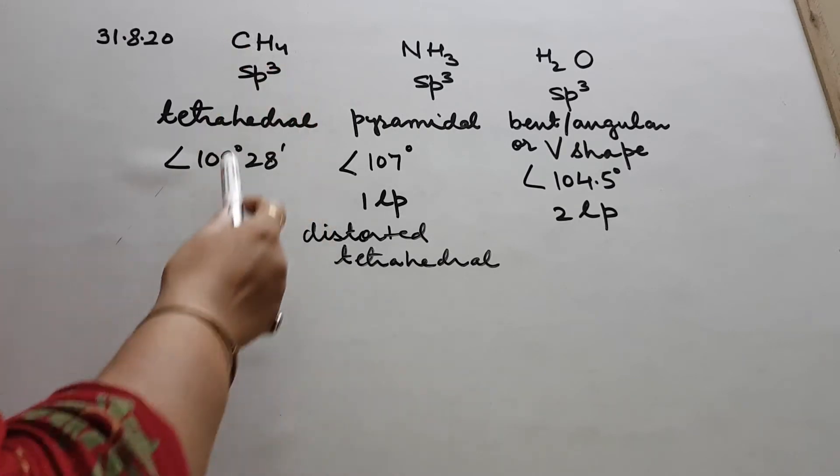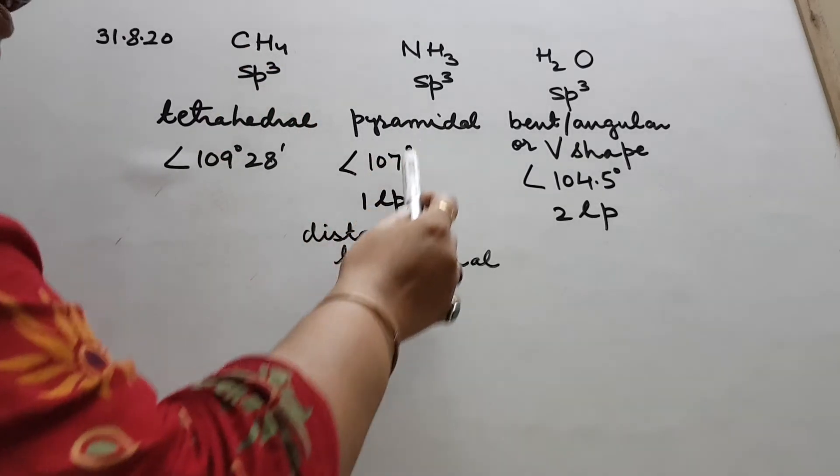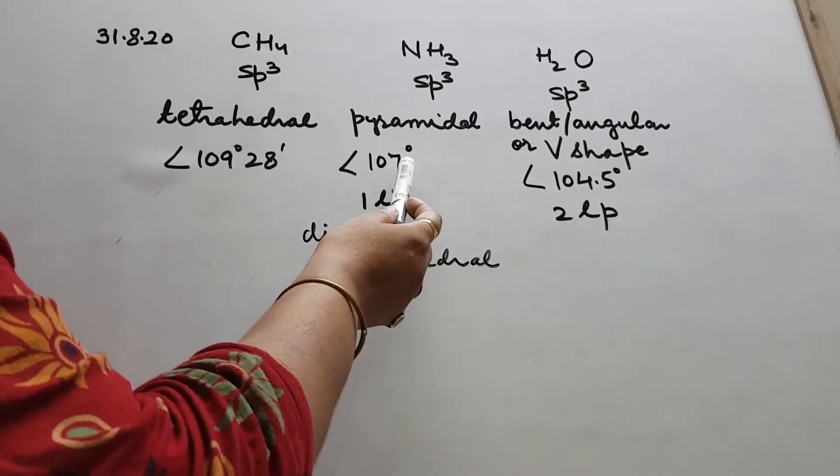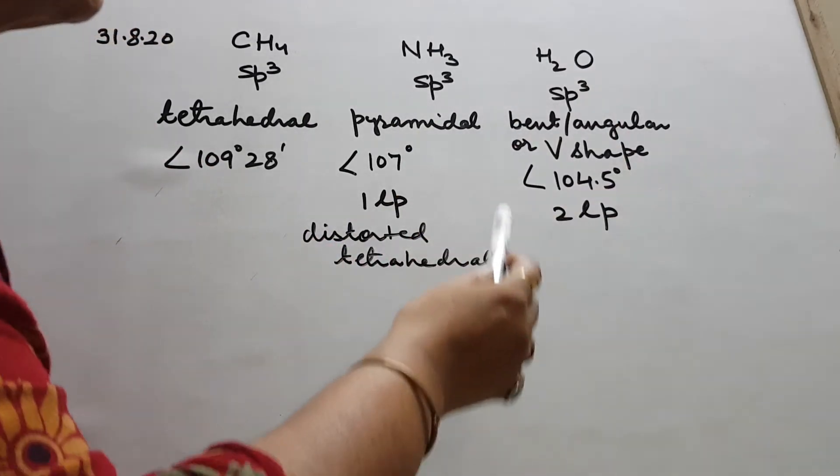But when we have one lone pair, due to more repulsion the angle goes down to 107 degrees. And when there are two lone pairs in case of water, the angle value further goes down to 104.5 degrees.